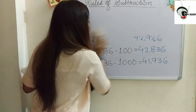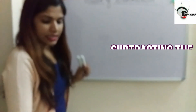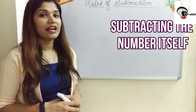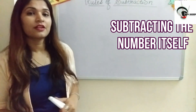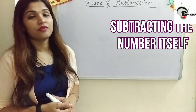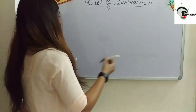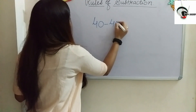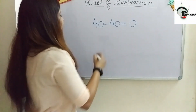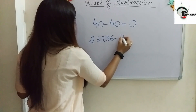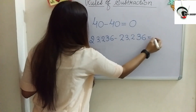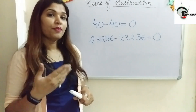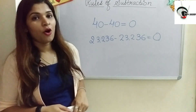The last rule is subtracting a number from itself. Suppose I had 5 chocolates and I gave all 5 to my younger sister — I am left with zero chocolates. Regardless of the number, when we subtract a number from itself, we get zero. For example, 40 minus 40 equals zero, and 23,236 minus 23,236 also equals zero.